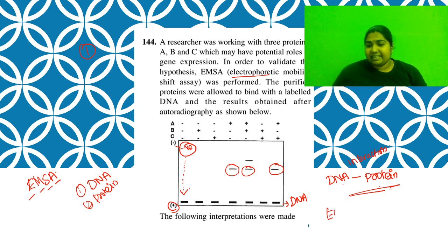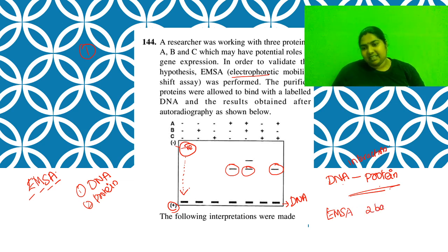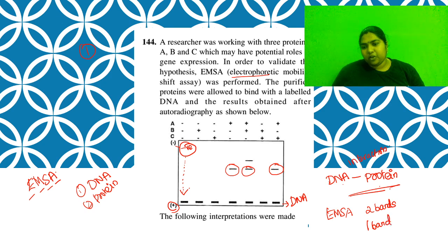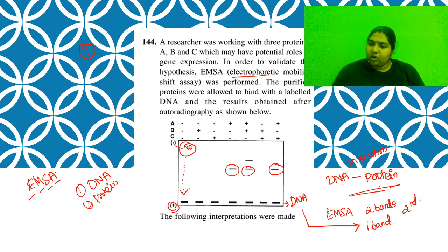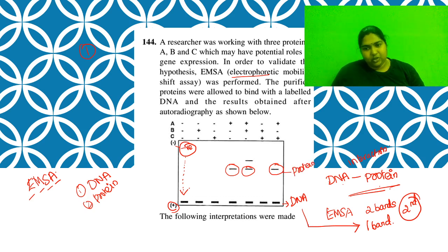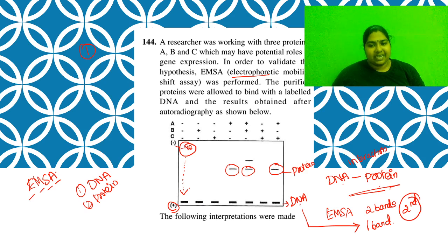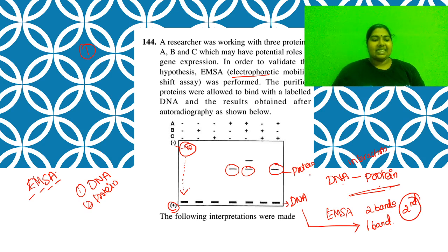In an EMSA gel, whenever you see two bands - one band is meant for your DNA, and the second band conveys about the protein that is interacting with your DNA. The bottom band is your DNA, and apart from that, if anything else is there, that is the protein actually interacting with your DNA. With this knowledge, let's get into the question.